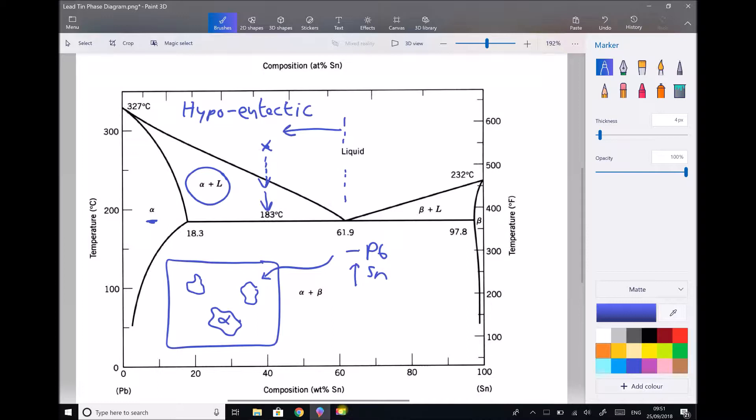So if we drop the temperature a little further, to say 185 degrees, then we're going to end up with greater amounts of solid alpha, meaning the composition of tin within the liquid is going to continue to increase.